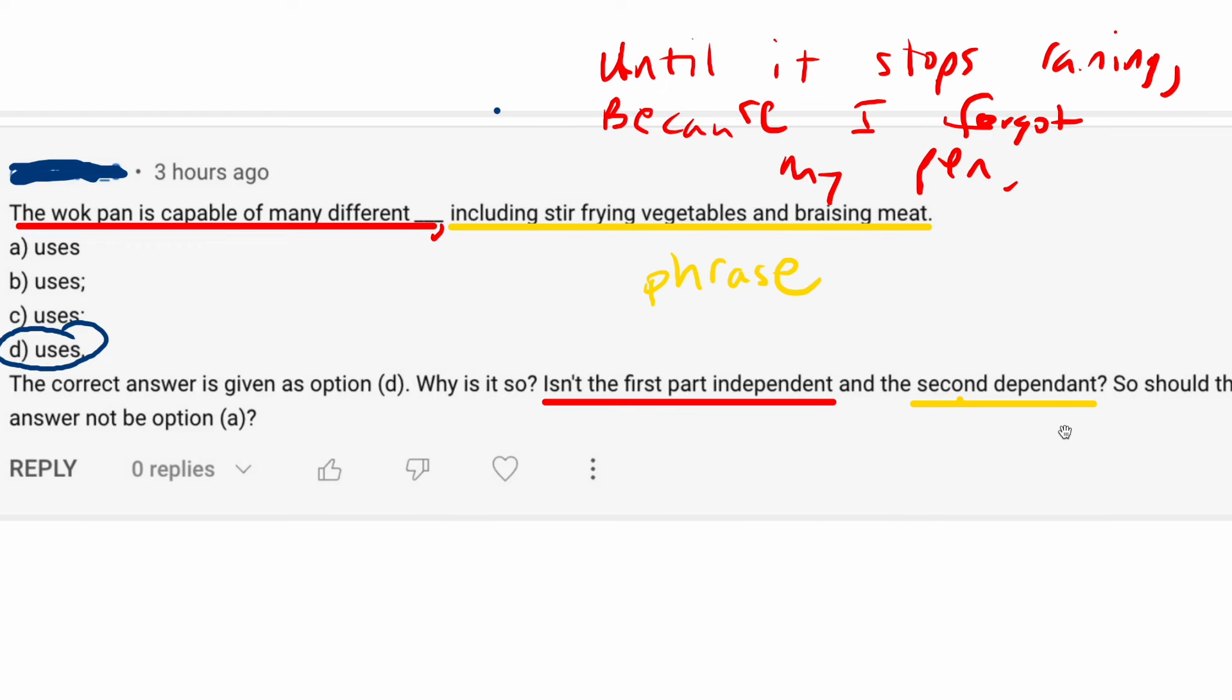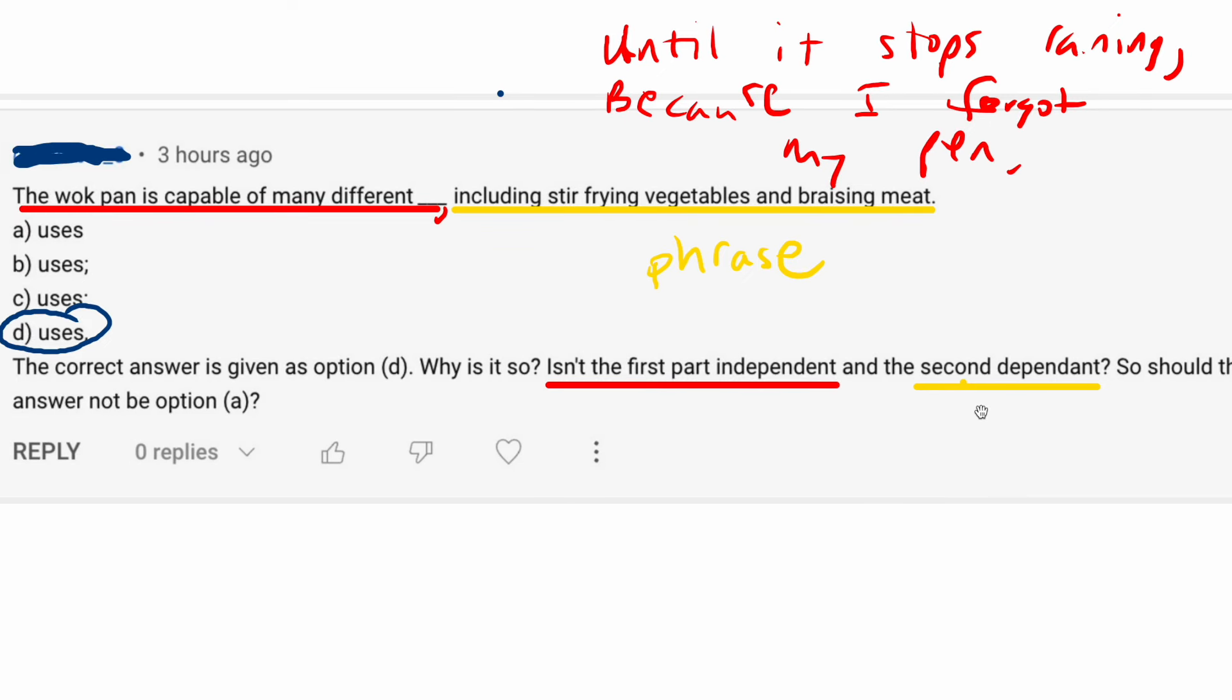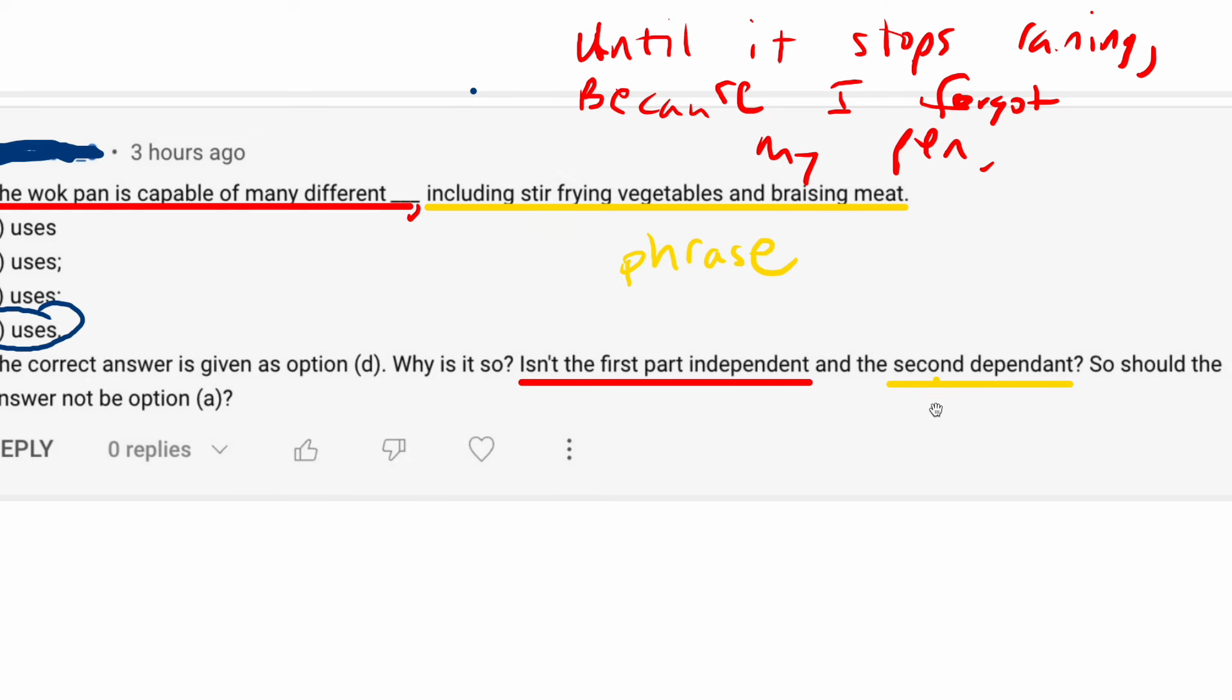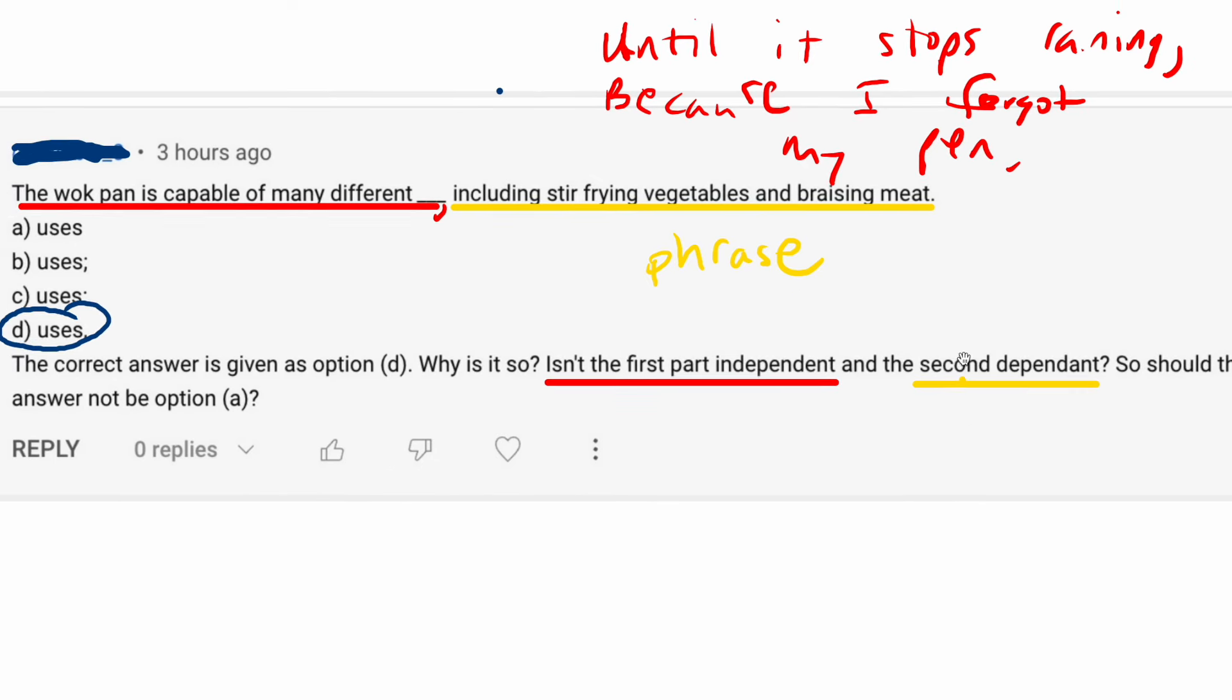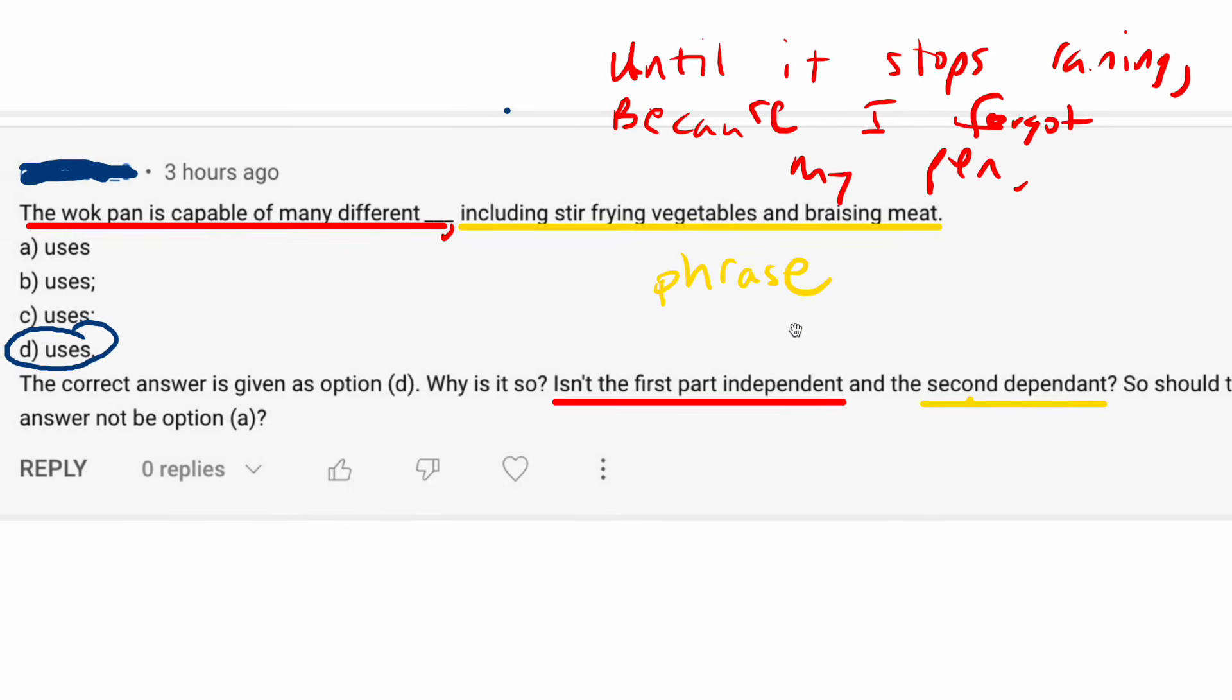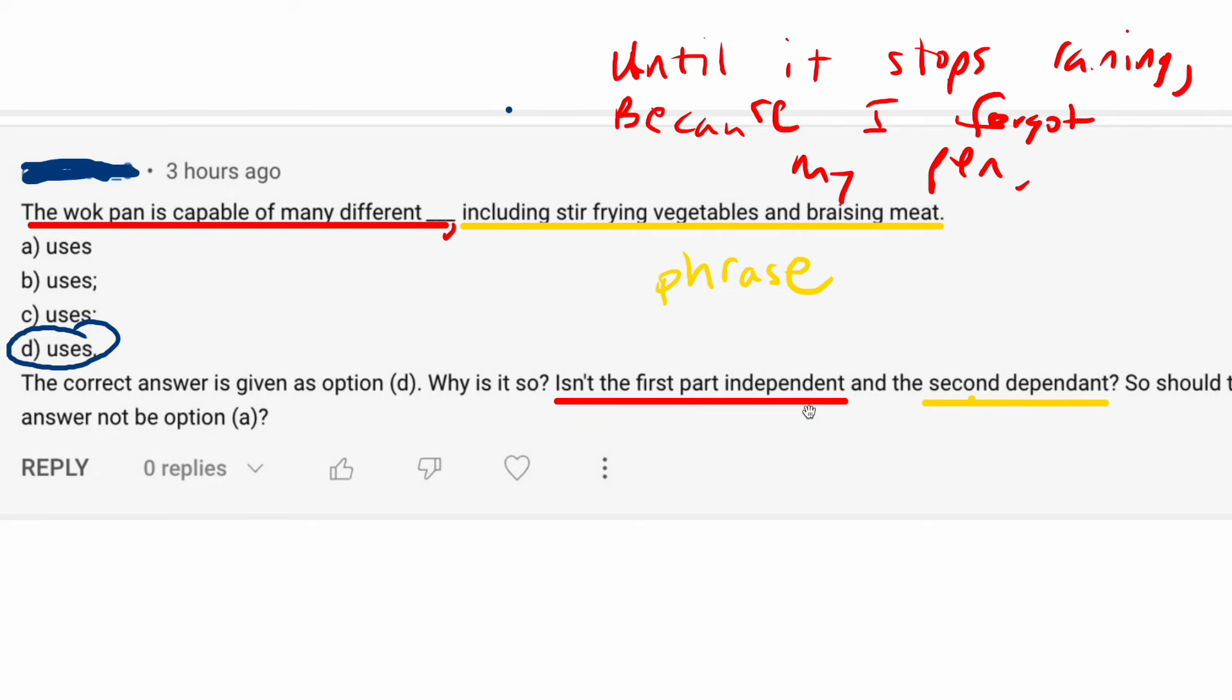So comma is needed because this is a phrase. But again, I'll link to another video about commas before dependent clauses that come later in the sentence. And it can get a little complex. It is true that usually you don't need a comma before a dependent clause at the end of the sentence. But sometimes you do. So check out that other video for more on that.